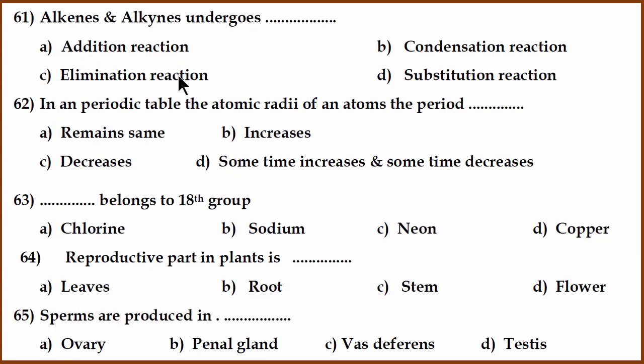All right. More questions on organic chemistry. Alkenes and alkynes undergo what? Alkenes and alkynes are both unsaturated. So you can add hydrogen easily. So that is called addition reaction. That is why we say it is addition reaction for unsaturated hydrocarbons.